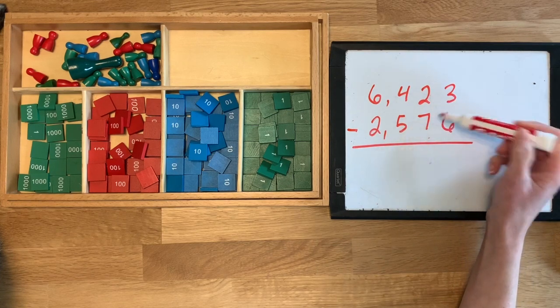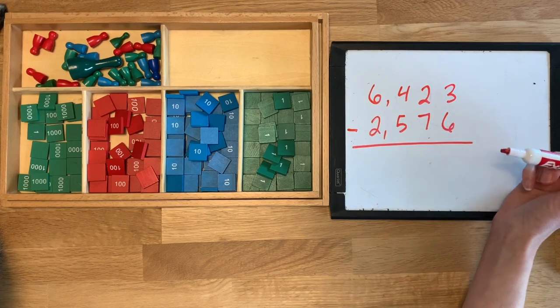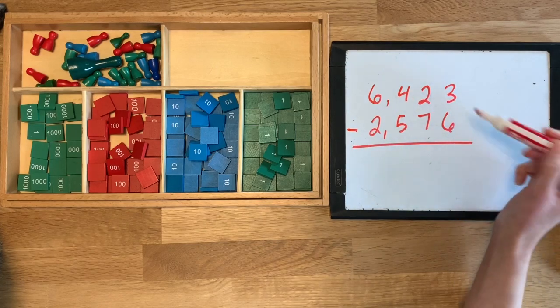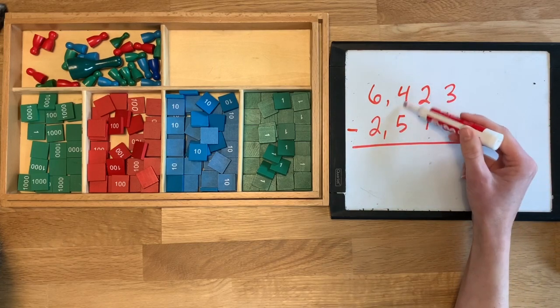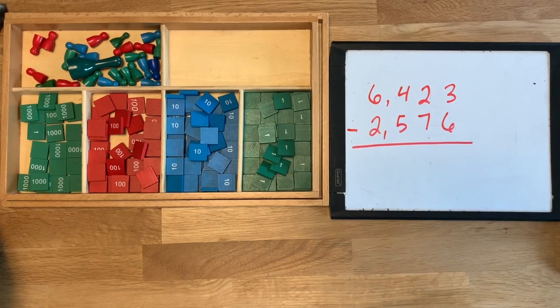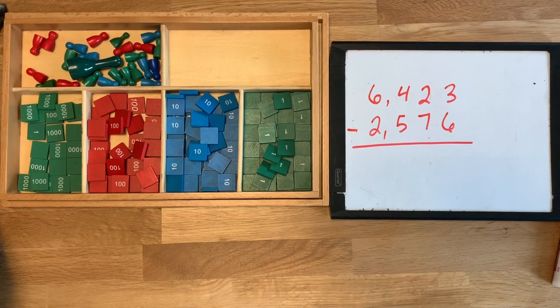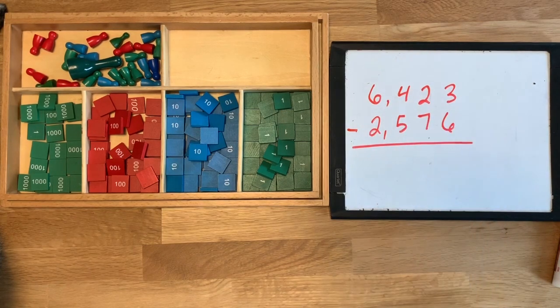But all of these digits up here are smaller than these digits down here. 3 is smaller than 6, 2 is smaller than 7, 4 is smaller than 5. So we're going to have to borrow for the units, the tens, and the hundreds. Not the thousands because we don't have any ten thousands to borrow from. So I need to get all of the top number out.